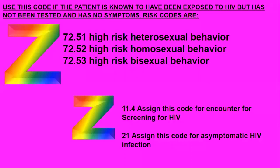Use the risk codes if the patient is known to have been exposed to HIV but has not been tested and has no symptoms. Z72.51 is high-risk heterosexual behavior; Z72.52 is high-risk homosexual behavior; Z72.53 is high-risk bisexual behavior. Z11.4 is assigned for an encounter for screening for HIV — use this when the patient is having an HIV test. Z21 is assigned for asymptomatic HIV infection status. Please take the time to label these in your ICD-10.